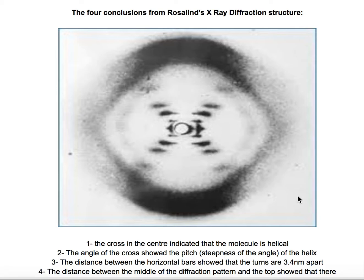The first conclusion she came up with was the cross in the center indicated that the molecule is helical. When we look at this structure, we can see a very clear cross right in the middle, and this is because the molecule is helical.